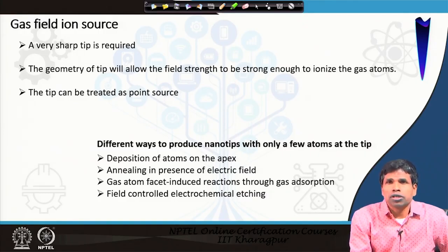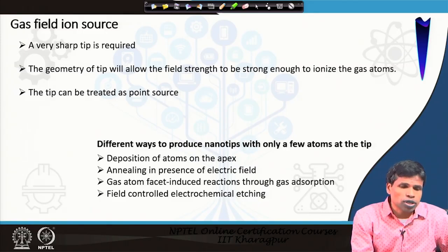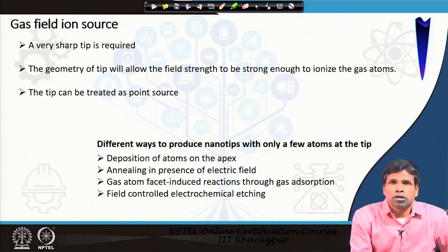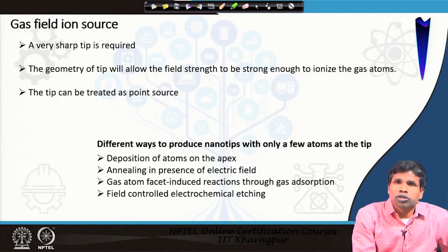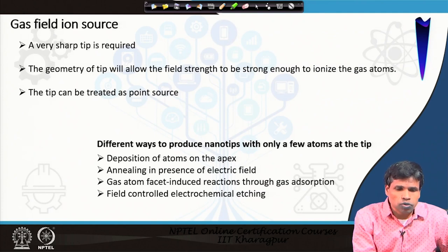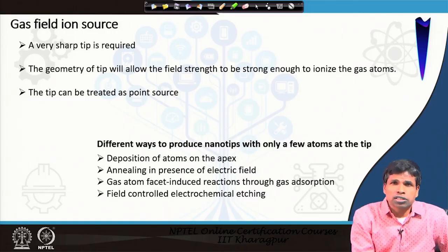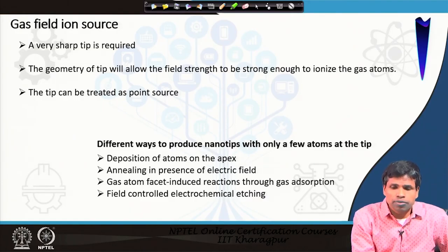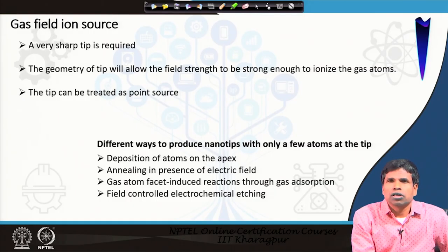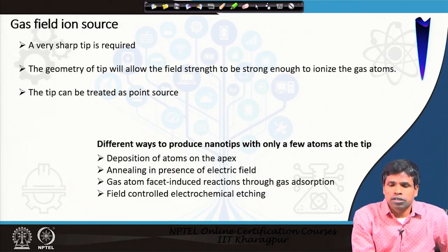Just like in electron microscopy where a tungsten tip is used, here we also use a tungsten tip — a very sharp tip. In the field emission SEM, the tip size is around 5 nanometers; here, a much sharper tip is required. The geometry of the tip allows the field strength to be strong enough to ionize the gas. The sharper the tip, the higher the field accumulated at it, and thus the less voltage needed to efficiently ionize the gas atoms.